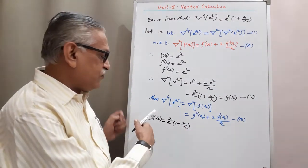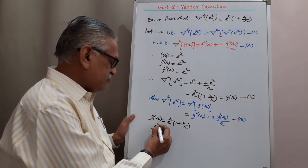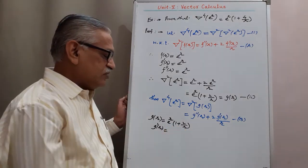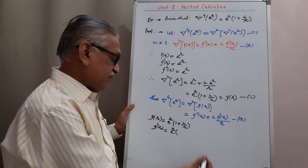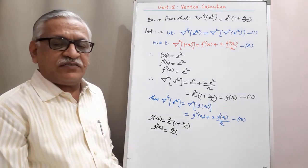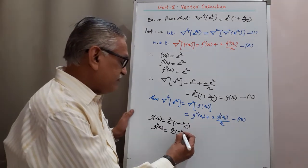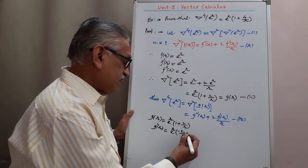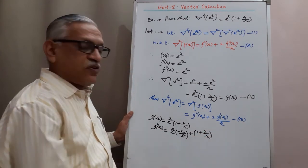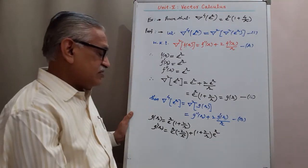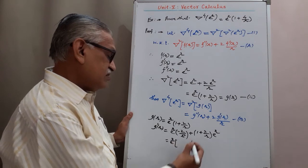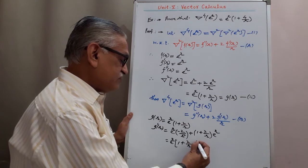We require the first and second order derivatives of g of r. Differentiating with respect to r and applying the product rule (uv rule): first term e raised to r as it is, times the derivative of 1 plus 2 by r, which is minus 2 by r square, plus the second term 1 plus 2 by r times the derivative of e raised to r which is e raised to r. Simplifying by taking e raised to r common, we get g dash of r equals e raised to r times 1 plus 2 by r minus 2 by r square.